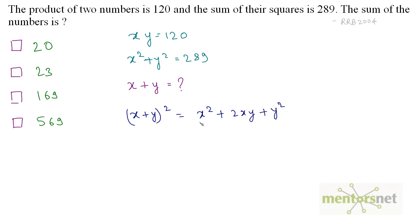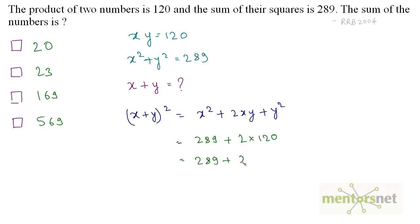We know the value of x squared plus y squared, and we also know the value of xy. So we can put these into the equation and then take the square root. So it equals x squared plus y squared, which is 289, plus 2 times xy, which is 120, giving us 289 plus 240, which equals 529.